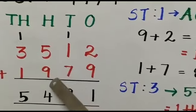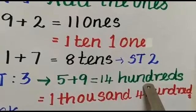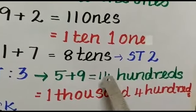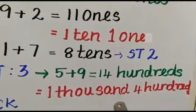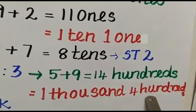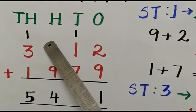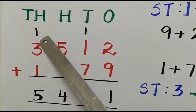5 hundreds plus 9 hundreds is equal to 14 hundreds. 14 hundreds is nothing but 1 thousand and 4 hundreds. So 4 hundreds we will write in the hundreds column, and 1 thousand will be carried forward to the thousands column.